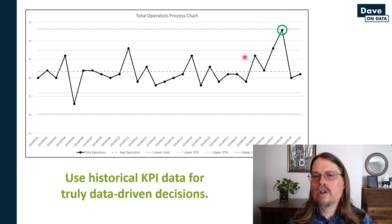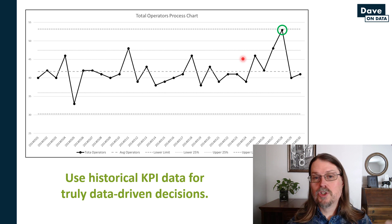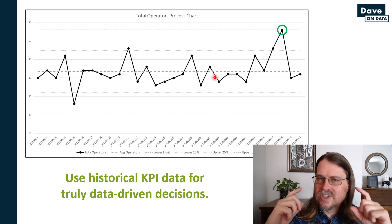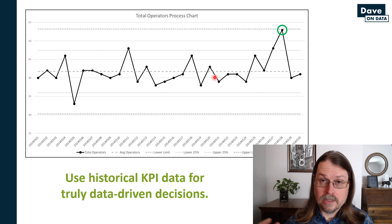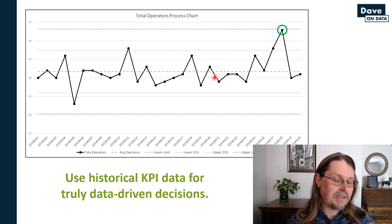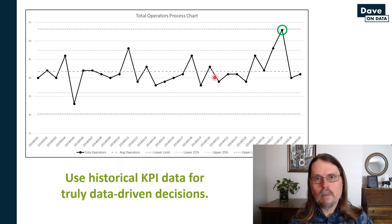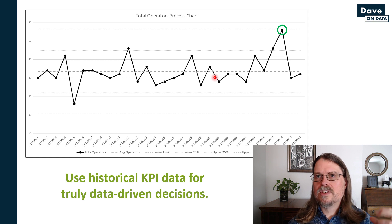There are other types of insights you can garner from this data visualization — this is just one, and it's simple to understand. This visualization is what's known as a process behavior chart, and it is the most useful single technique I've found in my analytics career — more useful than market basket analysis, more useful than linear regression, more useful than the mighty random forest. This chart is awesomeness, and let me show you why.